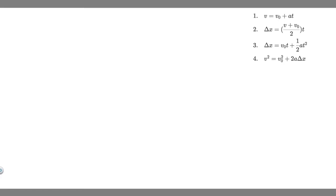In this problem, we're told a Cessna aircraft has a liftoff speed of 120 kilometers per hour. Part A: what minimum constant acceleration does the aircraft require if it is to be airborne after a takeoff run of 240 meters? Part B: how long does it take for the aircraft to become airborne?